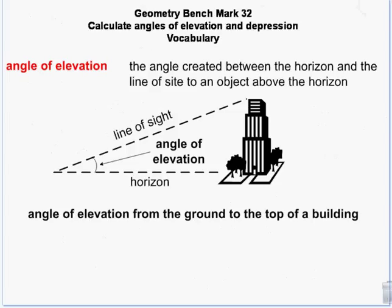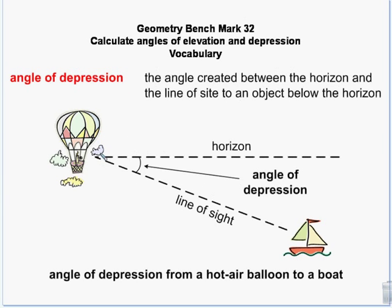Now let's look at applications for sine, cosine, and tangent. If you're looking at a building standing on the ground, the angle from the ground up to the top of the building is the angle of elevation — you're elevating upward. The angle of depression is when you're up in the air — in an airplane, hot air balloon, or on top of a building — and you look down at something below the horizon line.